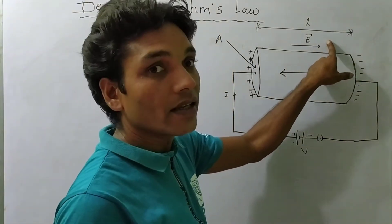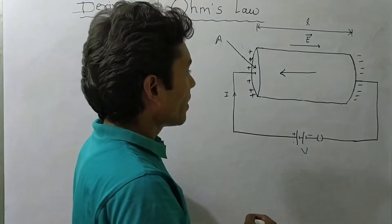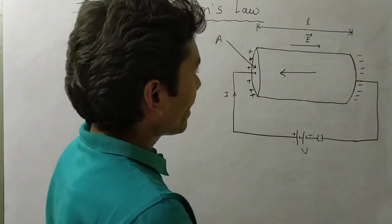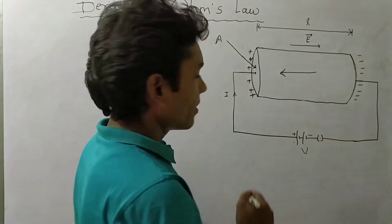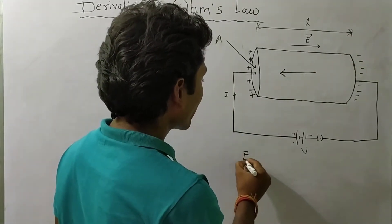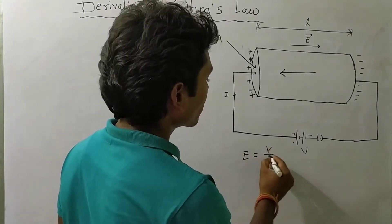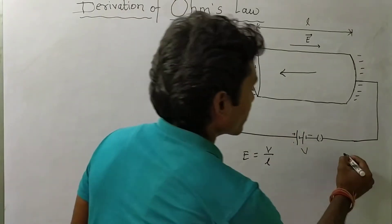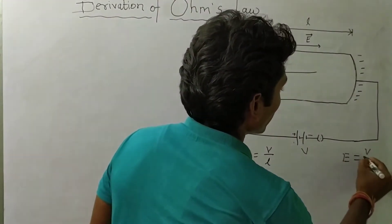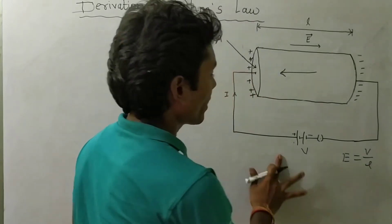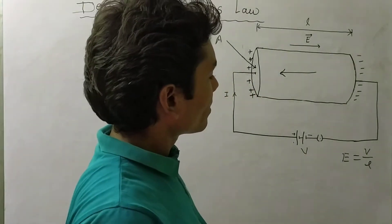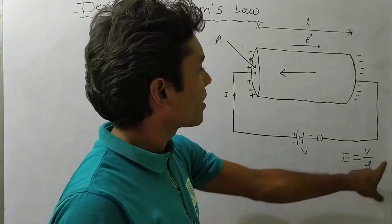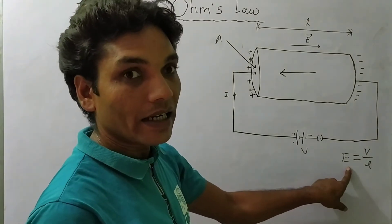Due to the potential difference, an electric field E is produced. So when applied potential is V and electric field is E, the relation between electric field and potential is E = V / L. This is the relation between potential difference and electric field.